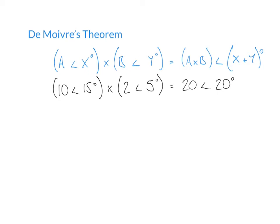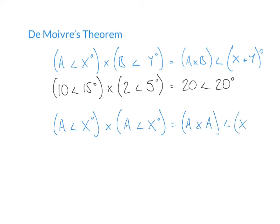Now, instead of multiplying two different numbers together, let's multiply the same number by itself. So we have a at an angle of x degrees, multiplied by itself. Our result is going to be a times a at an angle of x plus x degrees. We can simplify that to a squared at an angle of 2x. So we could write this as a at an angle of x degrees, squared.